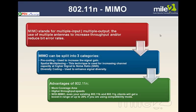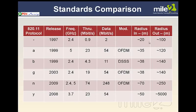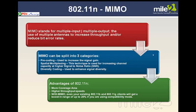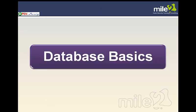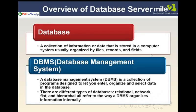802.11n uses MIMO — multiple input, multiple output — using multiple antennas to increase throughput and reduce bit error rates. It has a better coverage area and better speeds. Some sources say 248 megabits per second; some books and even router boxes will say 600 megabits per second — so speed varies. With MIMO capability, it's even going to improve some of your older clients — if you happen to have some older G standard devices in the house.